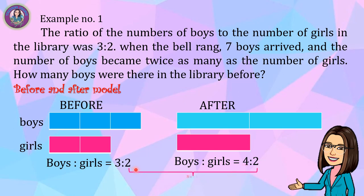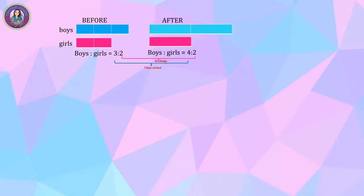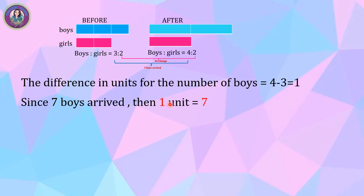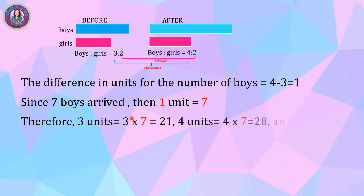The number of girls did not change, while seven boys arrived causing a change in the number of boys. The difference in units for the number of boys is 4 minus 3, which equals 1. Since seven boys arrived, one unit equals 7. Therefore: 3 units equals 3 × 7 = 21, 4 units equals 4 × 7 = 28, and 2 units equals 2 × 7 = 14.